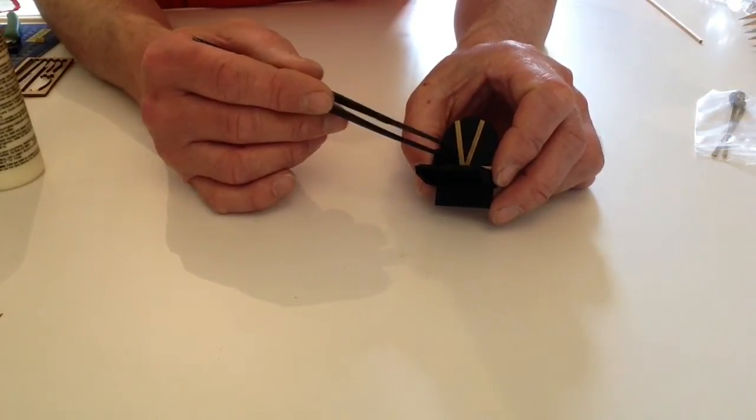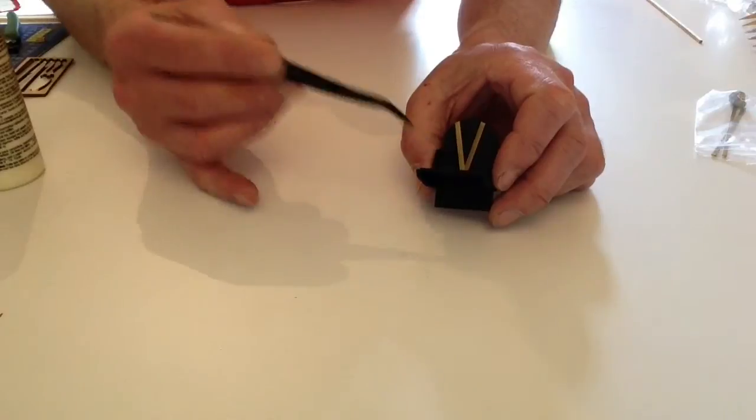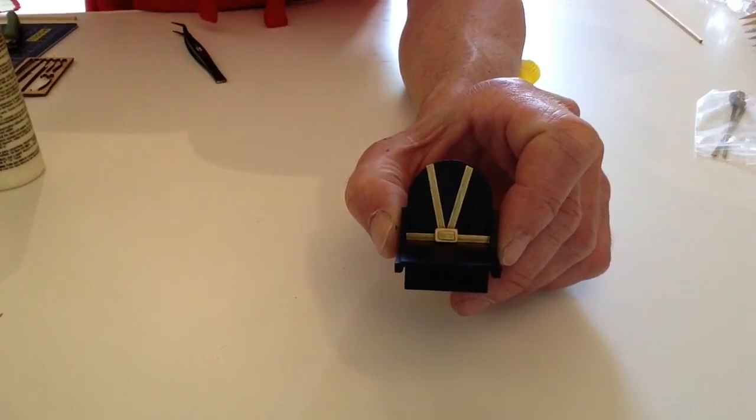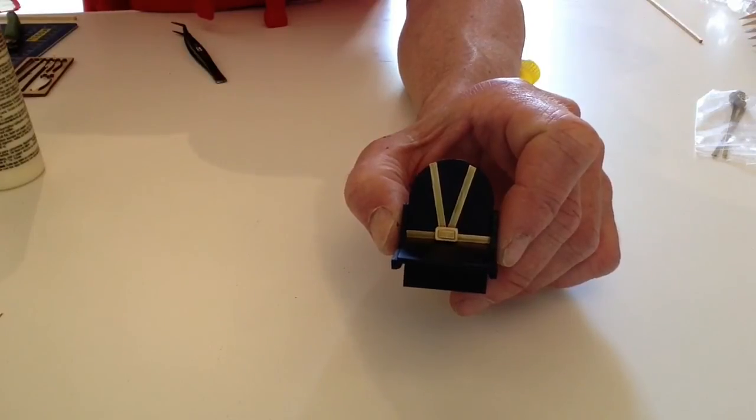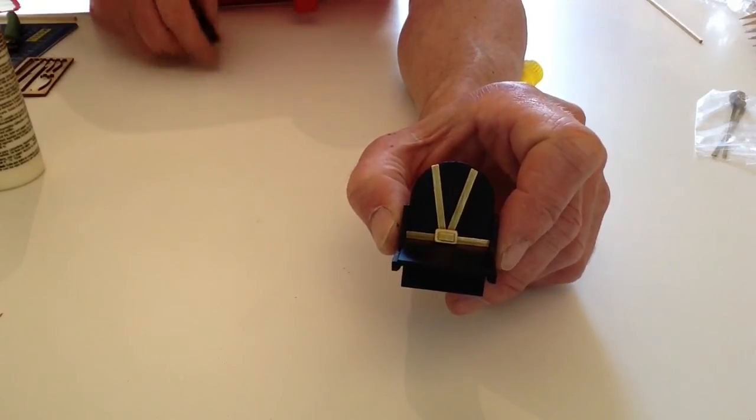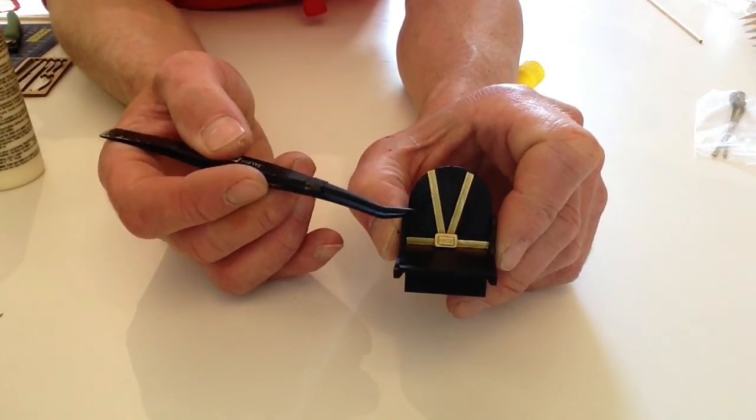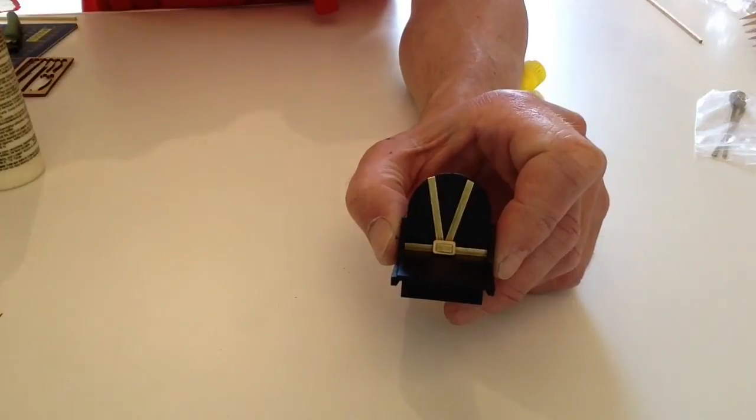Once you've done that, place the buckle into position and glue it into position. Then if you so desire, we can paint the wooden area silver and the brass areas brown to simulate leather.